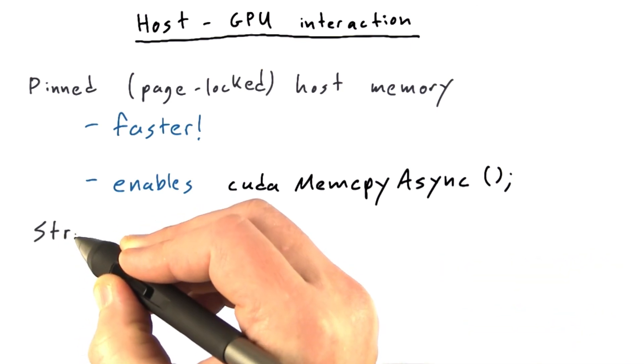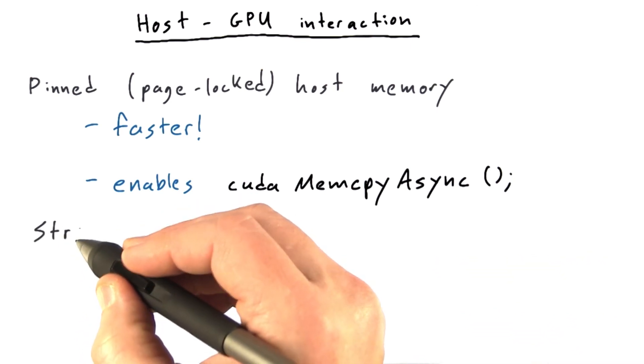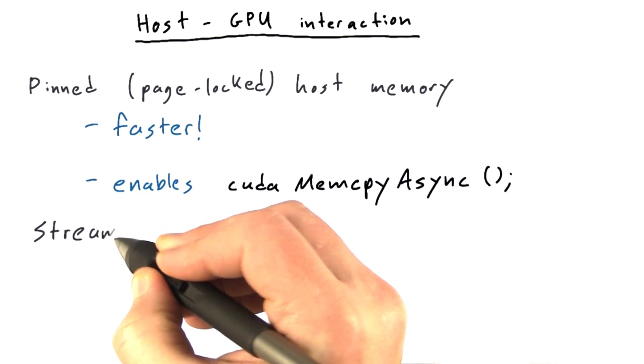So to control that asynchronous interaction, we have to introduce the next topic in host GPU interaction, and that's streams.